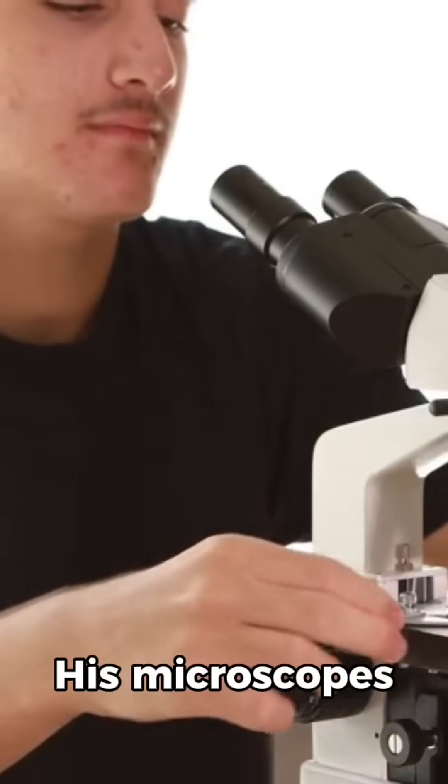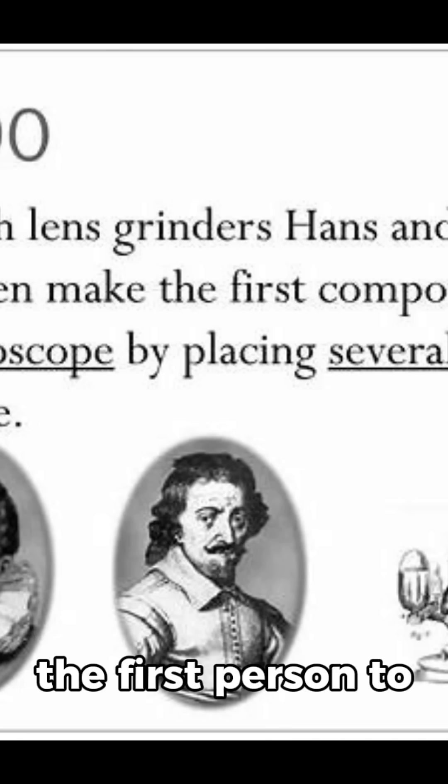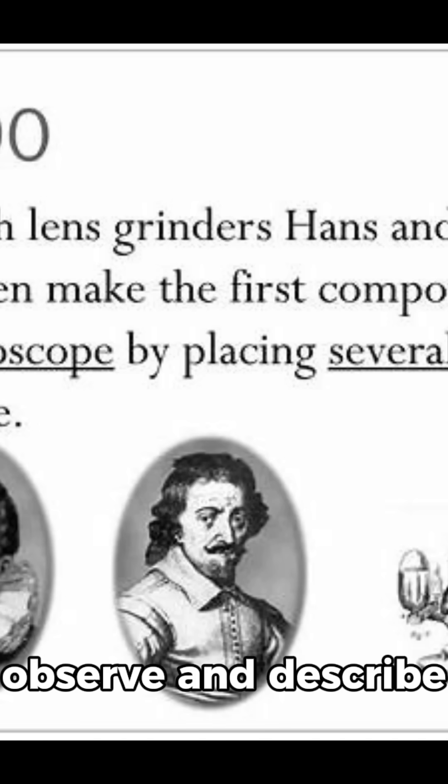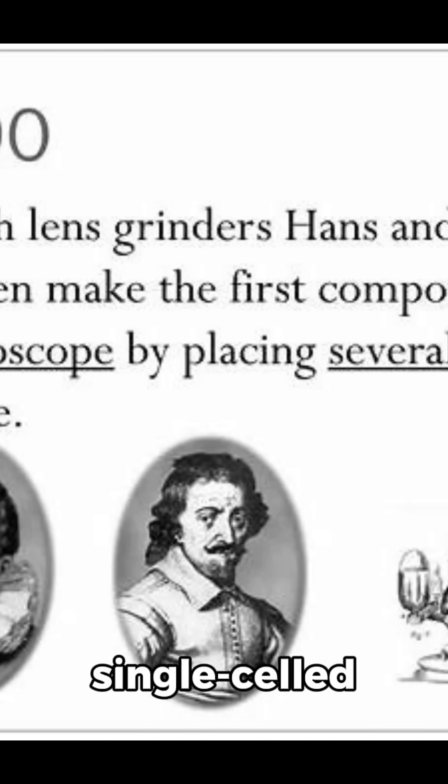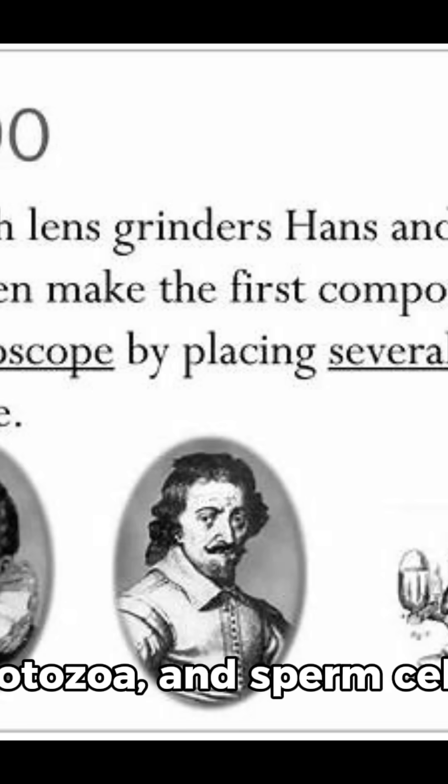His microscopes could magnify up to 200 to 300 times. Using these, he became the first person to observe and describe single-celled organisms, which he called animalcules, including bacteria, protozoa, and sperm cells.